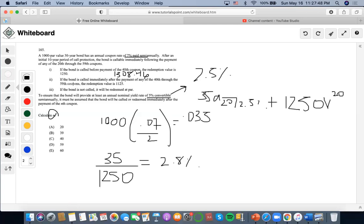For scenario two, the bond is being called immediately at the premium of any of the 40th through 59th coupons. The redemption value is 1125. Let's create a new coupon rate and compare it to the yield rate to see if this produces a premium or discount bond. We're going to do 35 out of 1125 redemption. We get 0.0311, which is 3.11%. Is it greater than the yield rate? Yes, it is, so it's a premium.